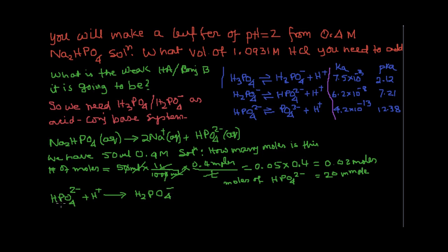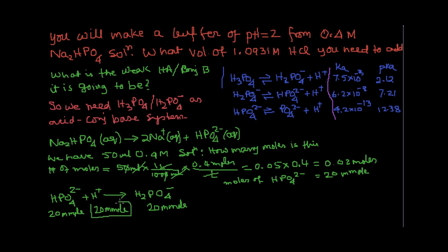As you can see, 1 mole of HPO₄²⁻ reacts with 1 mole of H⁺ to give 1 mole of H₂PO₄⁻. So for 20 milliliters of HPO₄²⁻, you need 20 milliliters of acid to convert it all to H₂PO₄⁻. That is the first step.